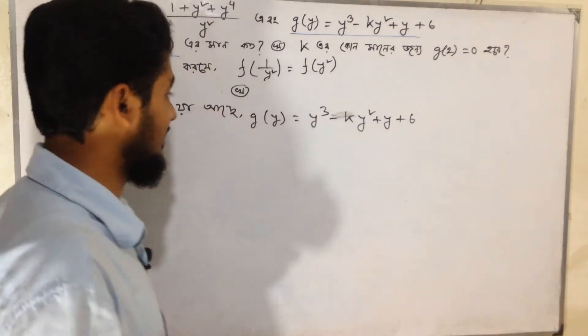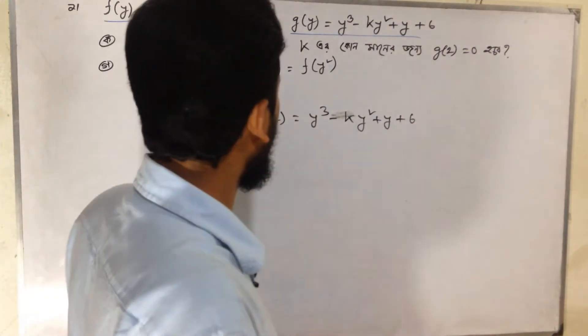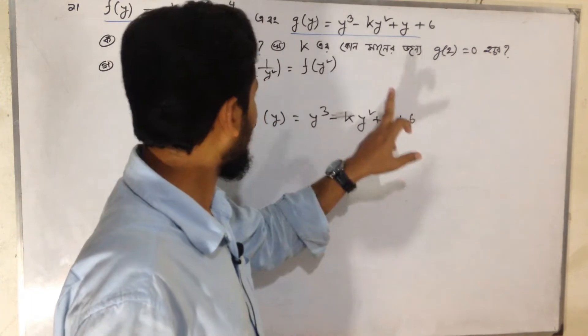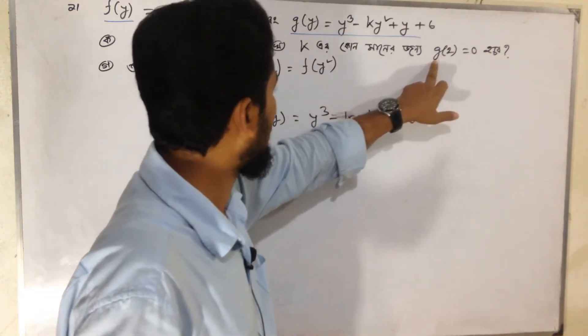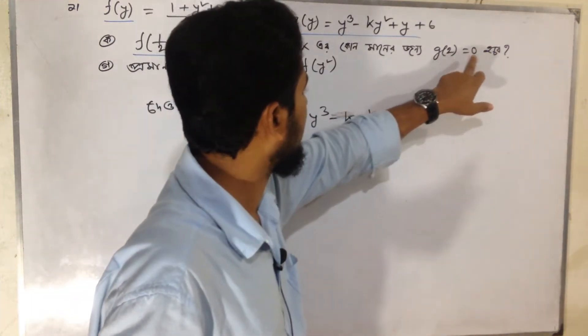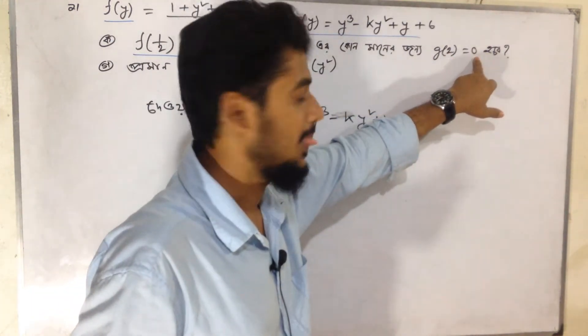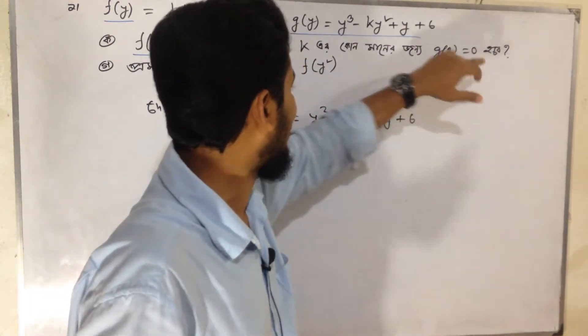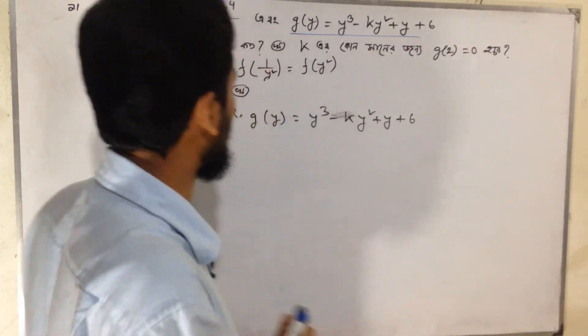Let's see the next step. The first step is g(2) equals 0. The second step follows from the first step.